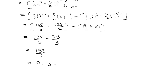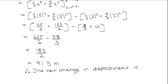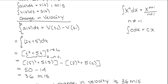Our units here are going to be meters. Therefore, the net change in displacement is 91.5 meters for t equals 2 to 5 seconds. And that is how you use the net change theorem.